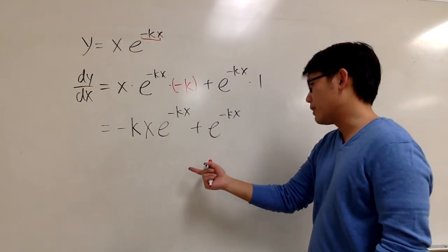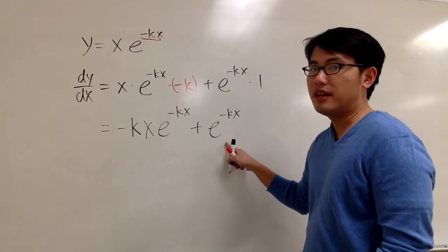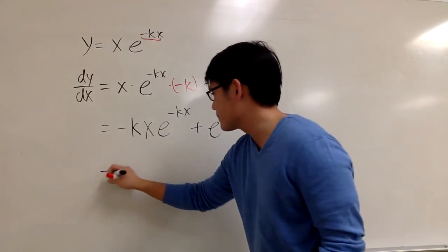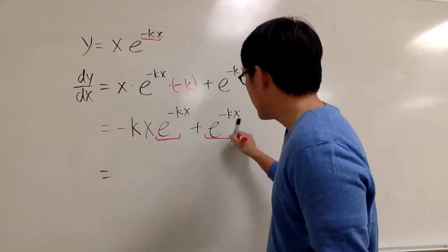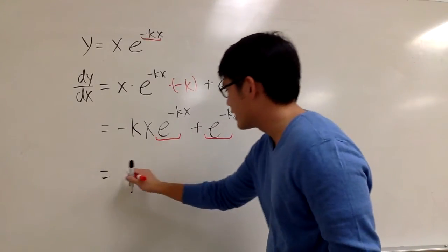And another thing that we can possibly do is, both of them have e to the negative kx, so we can factor this out. I can look at this, look at that, factor it out.